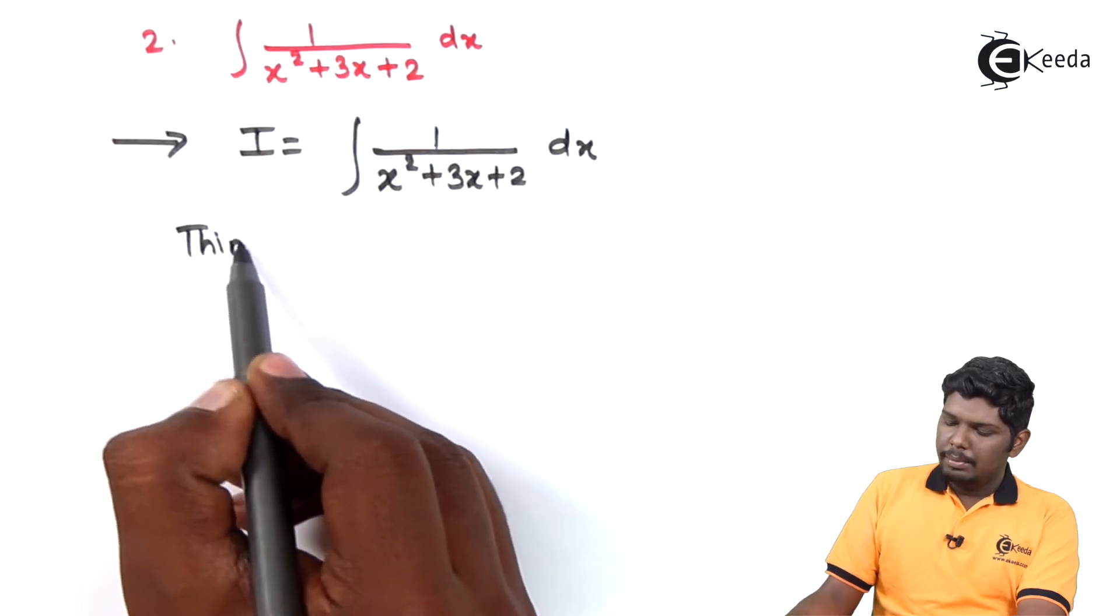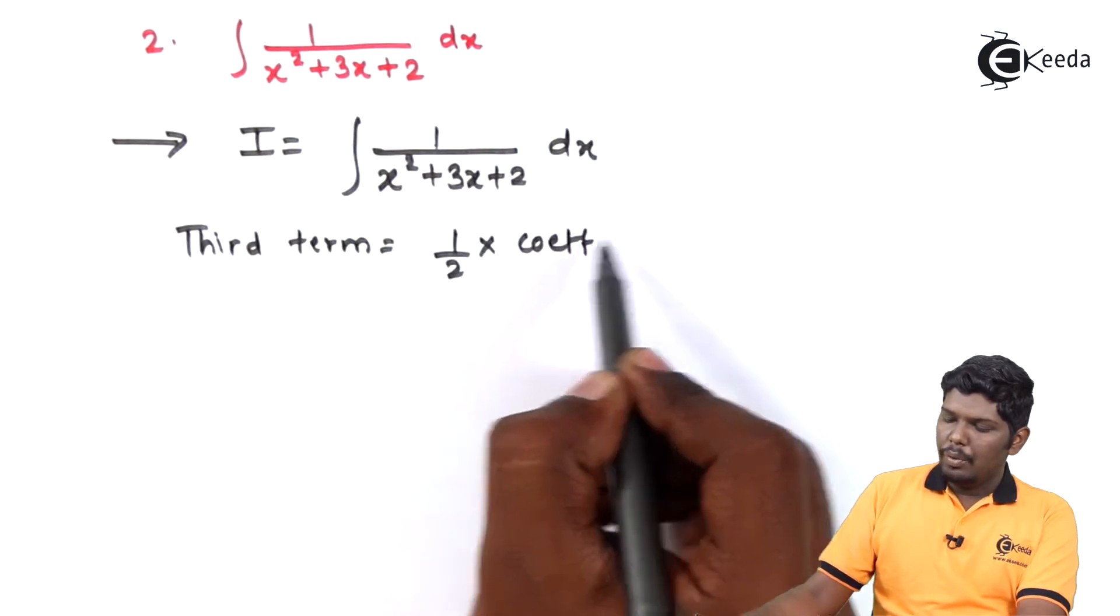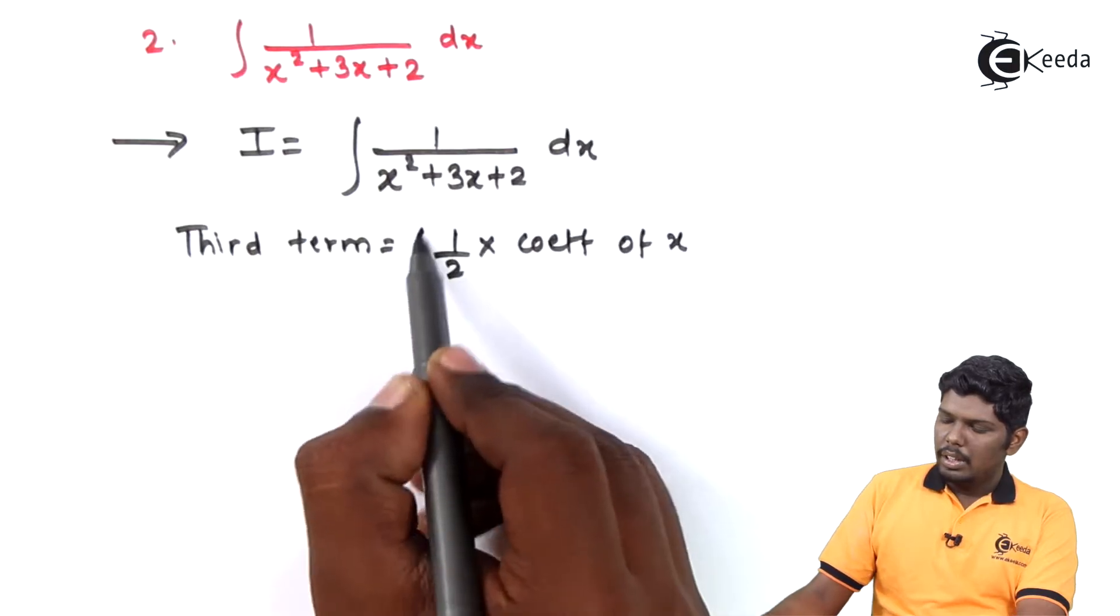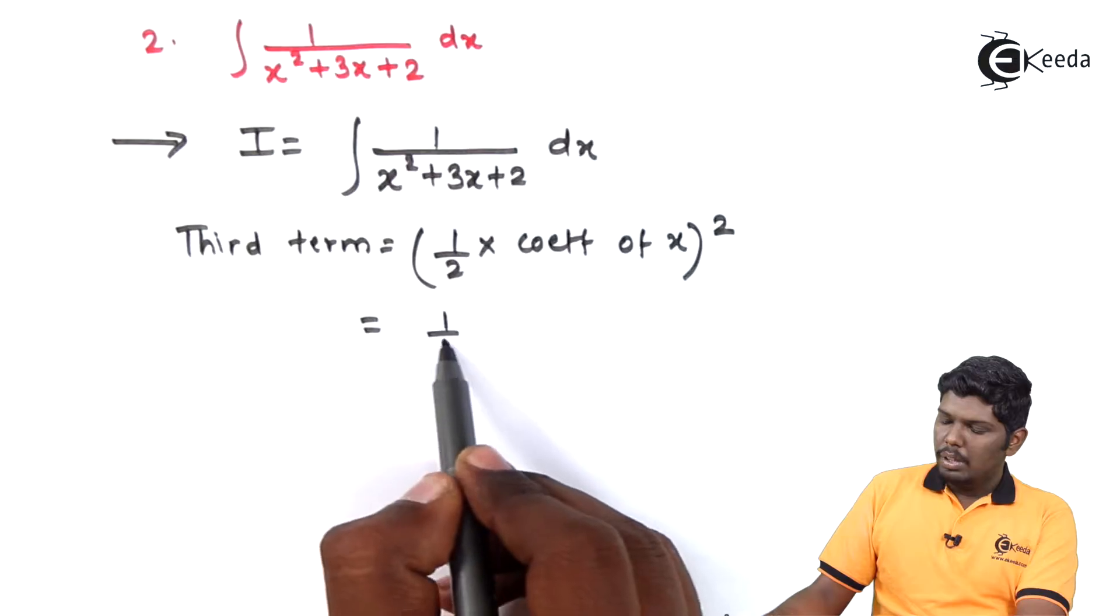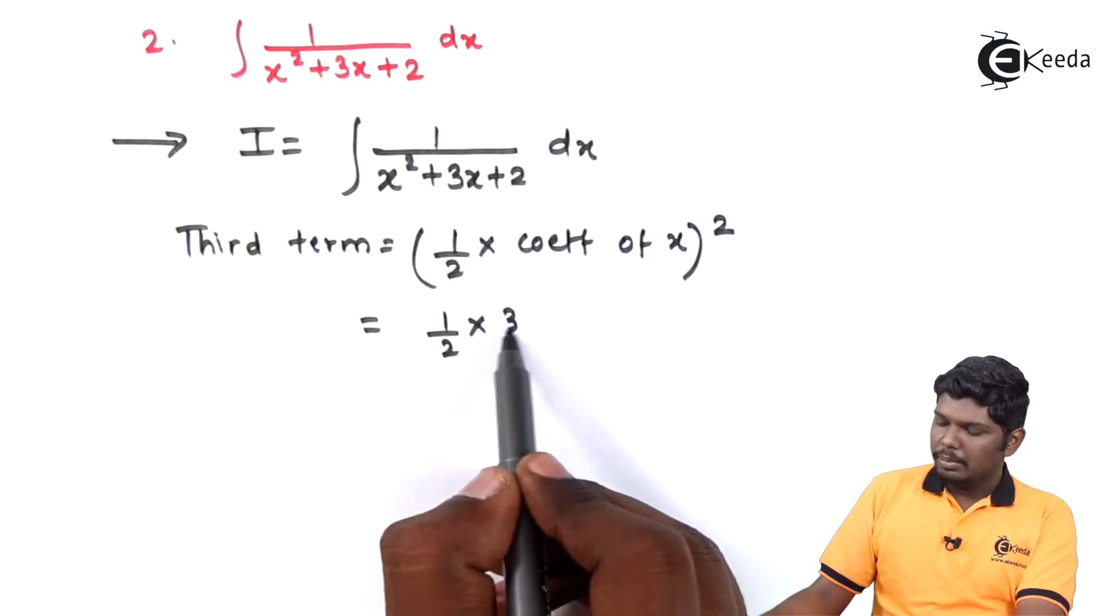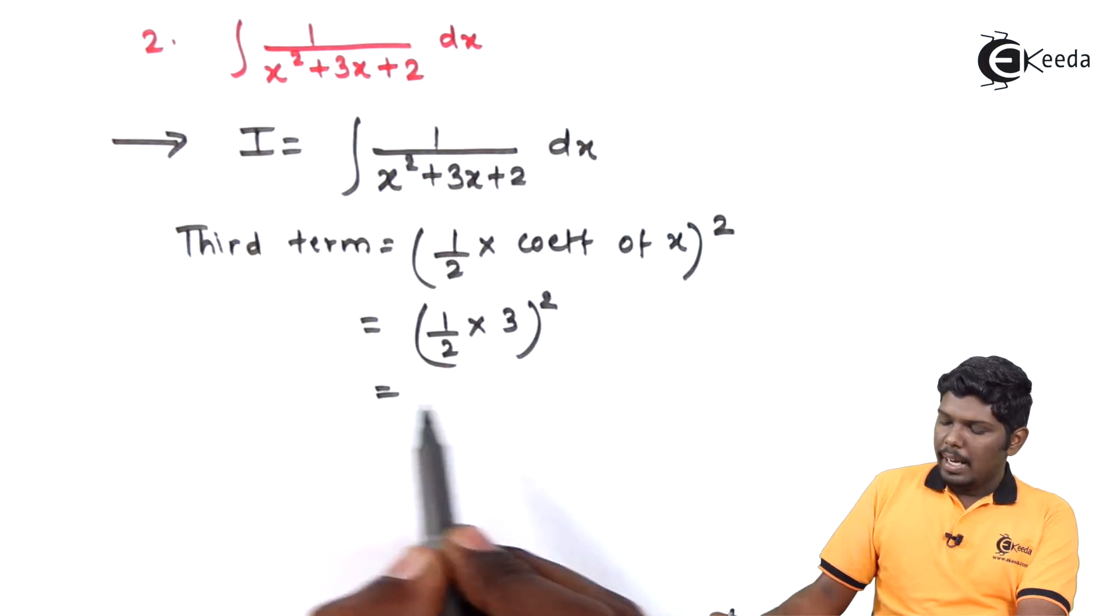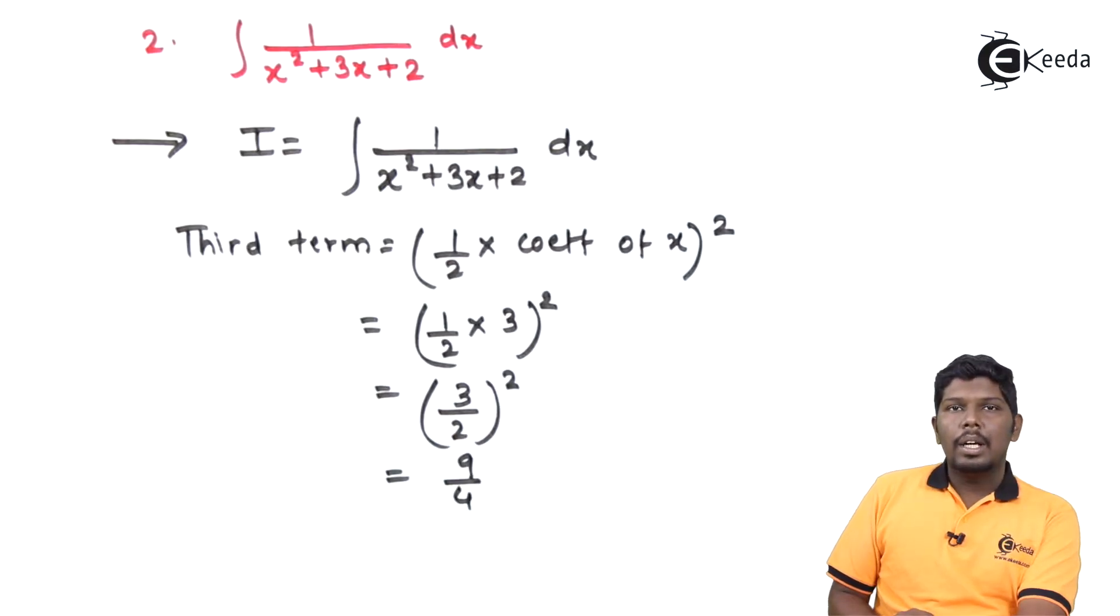The third term into coefficient of x the whole square, that is equal to half into coefficient of x is plus 3 the whole square. That will give you 3 upon 2 the whole square which is equal to 9 by 4. Now this third term we are going to add and subtract in the denominator.